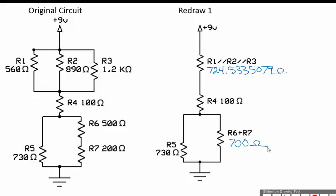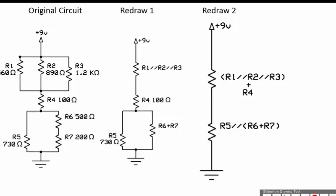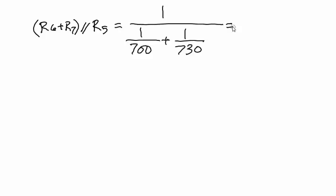But I can simplify this circuit even further if I do a second redraw. The second redraw shows that I can further combine resistors. So if I combine R1, 2, and 3, that parallel combination, with resistor 4 that is in series. And then I also show that R6 plus R7 can be combined in parallel with R5. Now I can solve those calculations. So on my calculator, I would enter 700, x to the minus 1, plus 730, x to the minus 1, enter, x to the minus 1, and then hit enter again and I get my answer as 357.3426573 ohms.